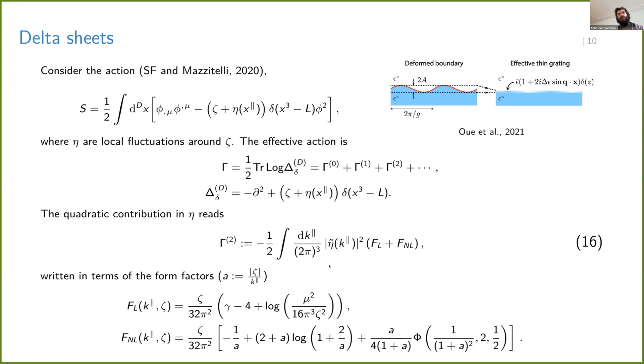In the case of the quadratic one, as I was saying, you can go further and compute also some form factors for this case, which are given in the bottom of the screen. So you see there that there are some intricate relations between the geometry given by the k_parallel, which is the Fourier coordinates of eta, and the zeta, which is the coupling.